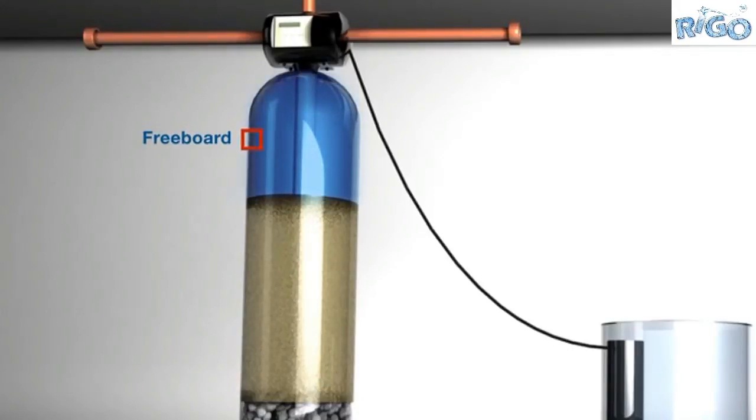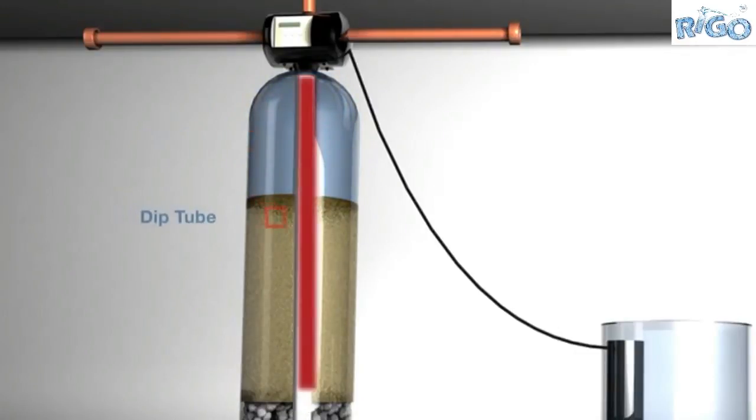This area also allows the dirt that is collected on top of the resin bed to be flushed out. Next we have the dip tube. This tube is also known as the distribution tube or riser tube.